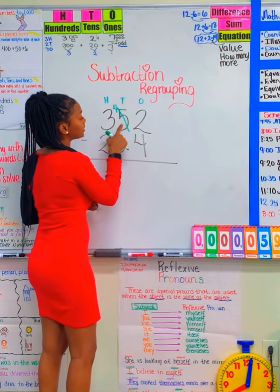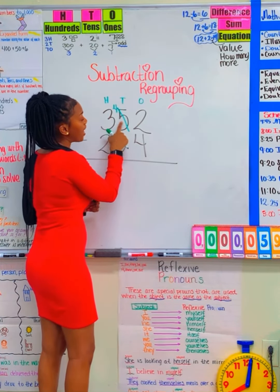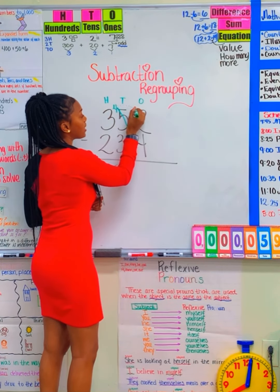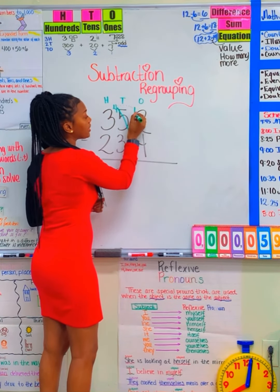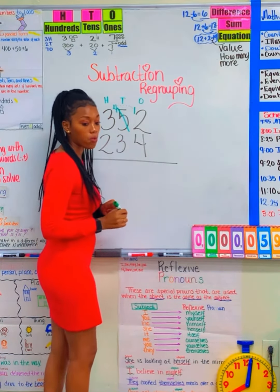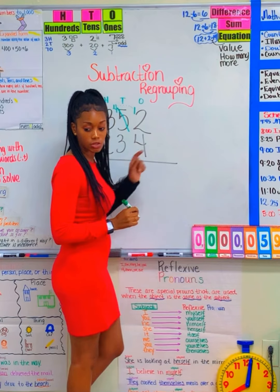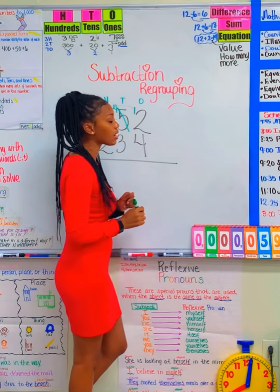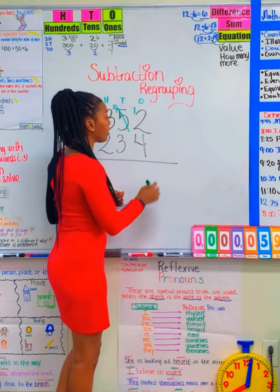So instead of having 5 tens, I now have 4 tens. And I'm going to give that one 10 to my one's place, so that becomes a 12.